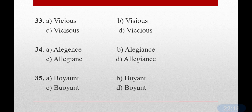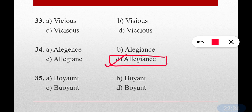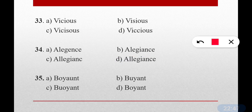Question number thirty-four: Allegiance — what is the correct spelling? The correct answer is option D — A-L-L-E-G-I-A-N-C-E. Allegiance comes from 'align' and means loyalty, fidelity — which is also an important word — and faithfulness. So allegiance means being faithful and loyal. Correct spelling: A-double-L-E-G-I-A-N-C-E.